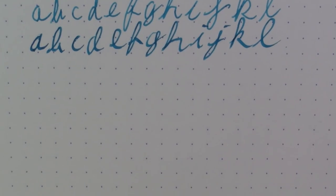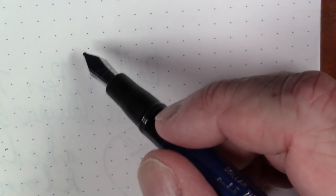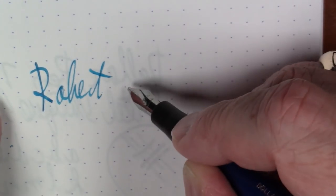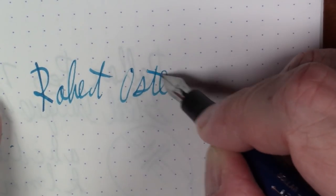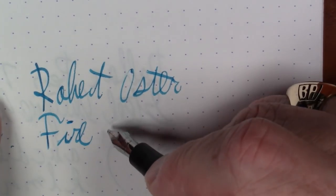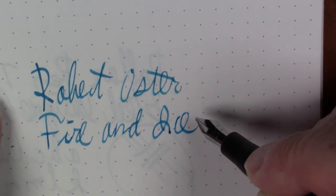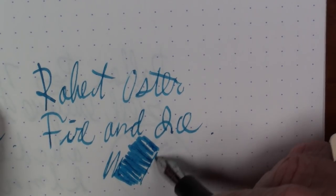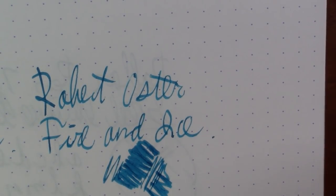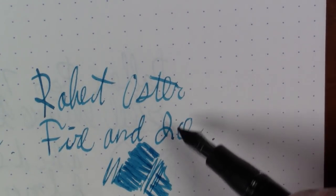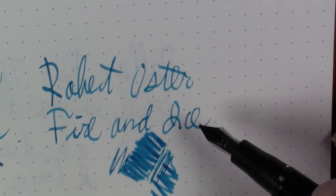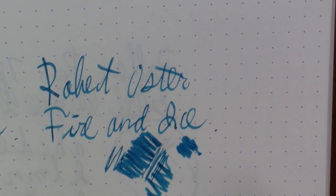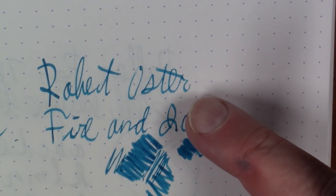So yeah, I think that pretty much shows the difference there. You got pretty much a consistent line here, nice line variation going on here. So that is this pen. Let's talk about the ink just a little bit, shall we? Okay, this ink is a Robert Oster Fire and Ice. This is a very very nice ink, kind of a turquoisey kind of blue, very attractive. On this Rhodia paper, you're not getting too much in the way of any kind of special effects, but it is just a very very pretty nice ink.